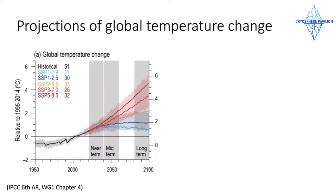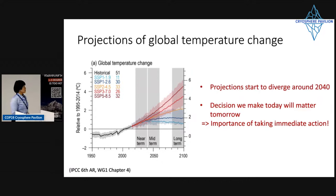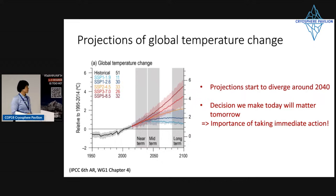Going forward, this plot shows the projections of global temperature change through the 21st century, with all values relative to the average between 1995 and 2014. The blue line represents what we agreed upon in the Paris Agreement — about 1.5 degrees Celsius warming by end of century. As you go higher in number, the forcing and warming are stronger. Projections really start to diverge around year 2040 — about 20 years' time — implying that decisions we make today will really matter tomorrow and underscoring the importance of taking immediate action.